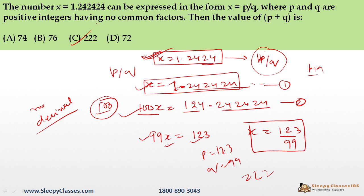It was a very good question. For these types of recurring decimals, remember: if two digits repeat, multiply by 100; if only one digit repeats, multiply by 10. This is a basic concept of converting non-terminating recurring decimals into p/q rational form.